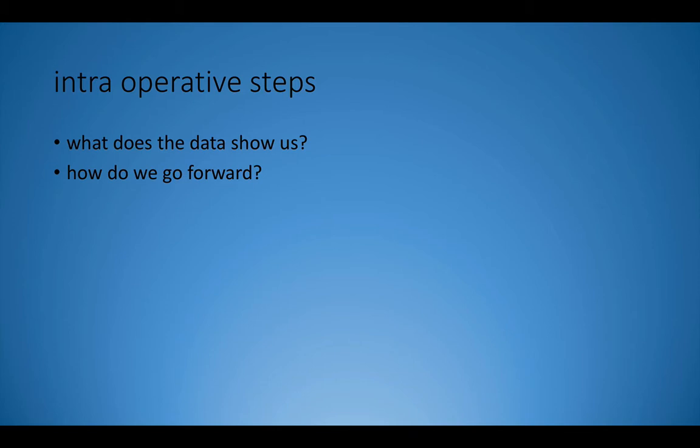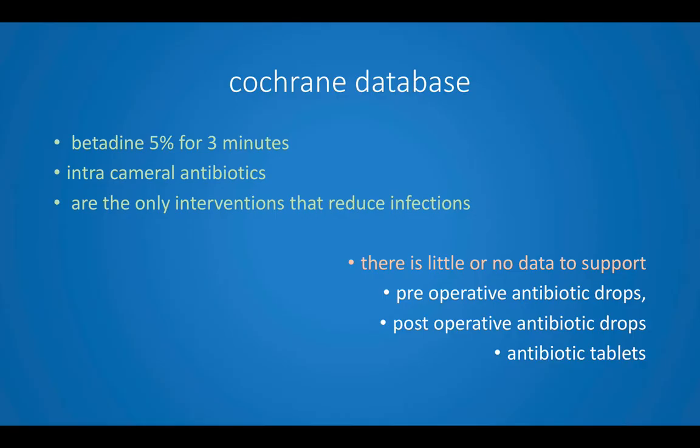So what intraoperative steps can the surgeon take? A review of the Cochrane database shows that betadine 5% for 3 minutes has been shown to decrease infection rates, and intracameral antibiotics have been shown to reduce infections. There is little or no data to support preoperative antibiotic drops, postoperative antibiotic drops, or the use of antibiotic tablets.